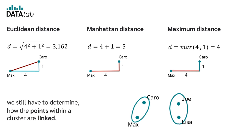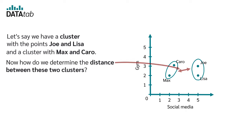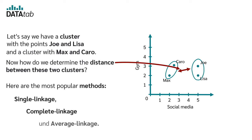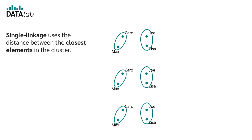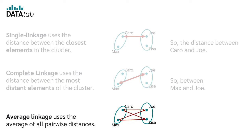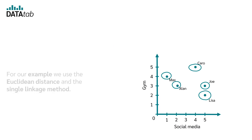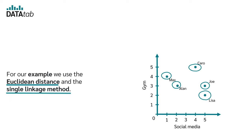We still have to determine how the points within a cluster are linked. Let's say we have a cluster with the points Joey and Lisa and a cluster with Max and Caro. How do we determine the distance between these two clusters? Here are the most popular methods: single linkage, complete linkage, and average linkage. Single linkage uses the distance between the closest elements in the cluster — so the distance between Caro and Chou. Complete linkage uses the distance between the most distant elements — so between Max and Chou. Average linkage uses the average of all pairwise distances. For our example, we use the Euclidean distance and the single linkage method.